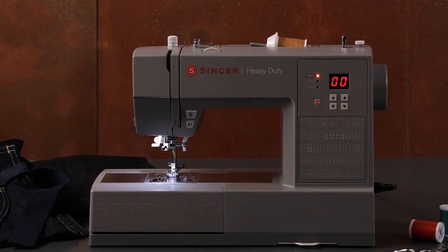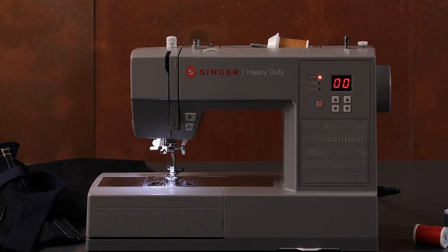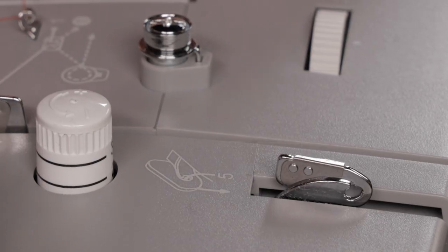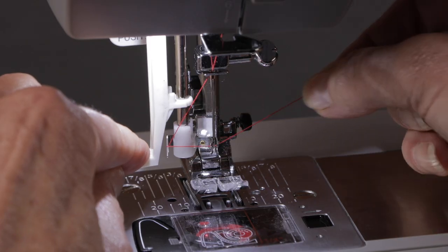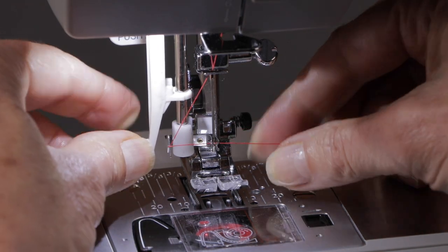The Singer heavy-duty computerized sewing machine, the HD 6600C series, is easy to thread thanks to convenient threading diagrams and needle threader. Now let's get started.